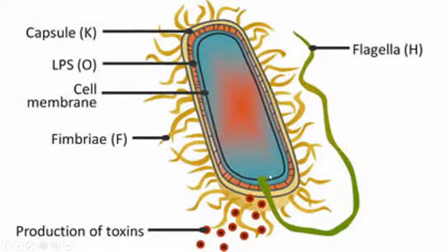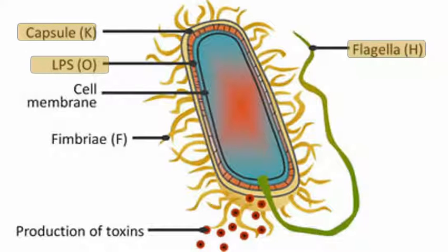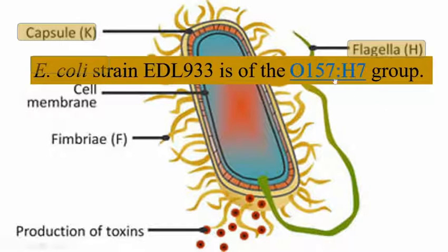First, we will have an overview of the antigens of the bacteria. These are the antigens of E. coli. You can see different types of antigens. Out of these, capsular antigen K, lipopolysaccharide O, and flagella antigen H are the major ones. Toxins also form one of the antigens. According to these antigens, they are grouped into different types. Out of these, O157:H7 is highly notorious for causing diarrhea in human beings.